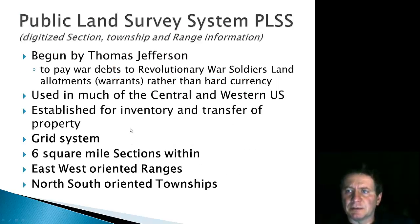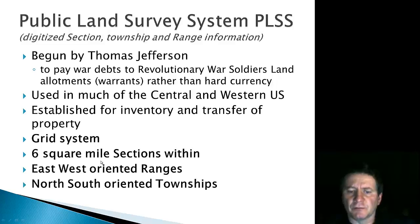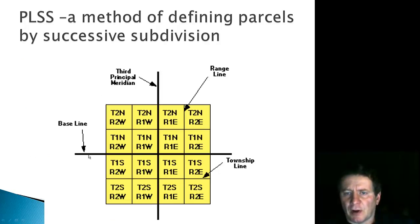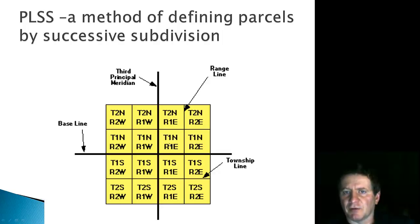Jefferson put the PLSS together to pay debts to war soldiers. It's a grid system of six-square-mile sections. East-west is oriented into ranges and north-south into townships. You've got the baseline and the meridian, and starting from their intersection, this would be township 1 north, range 1 east; township 2 north, range 2 east — establishing this method of dividing land by township and range.